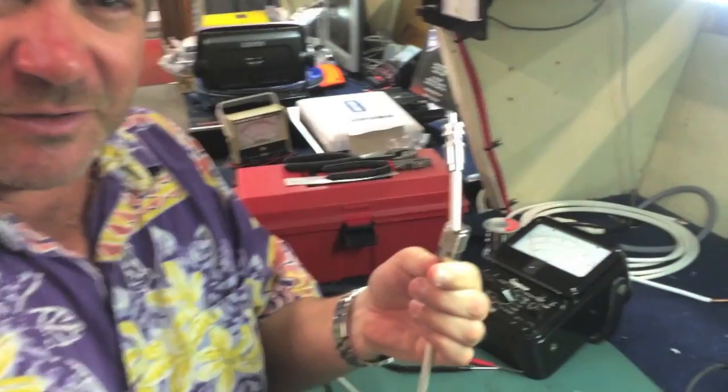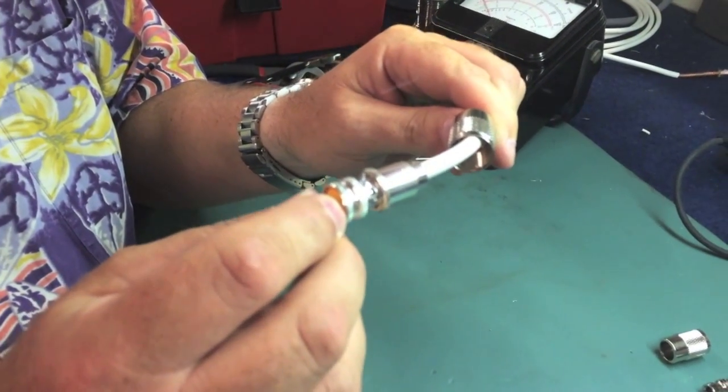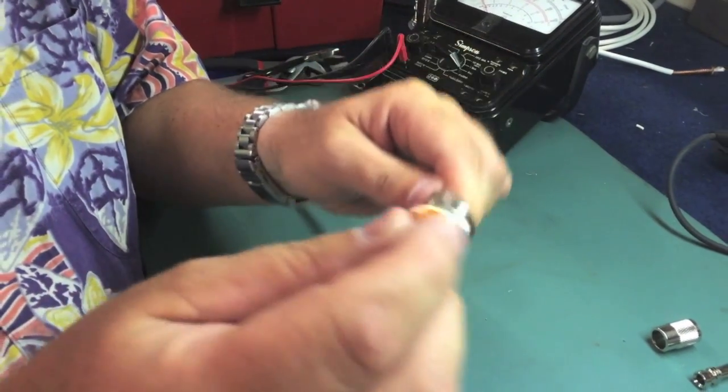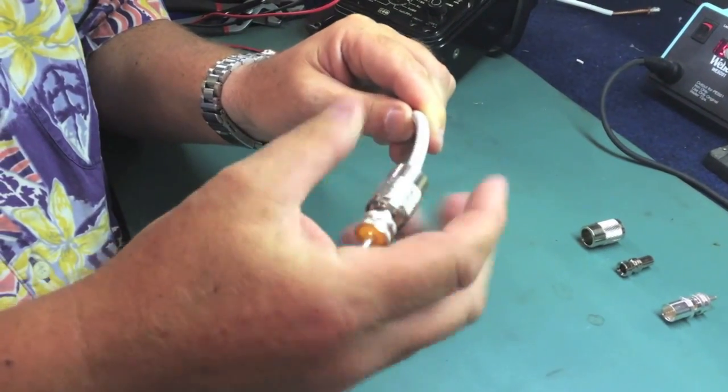We're going to talk today about the PL259 connector. This connector is designed for use with connecting an antenna to a VHF radio. Here is what it looks like as a completed assembly on a cable.